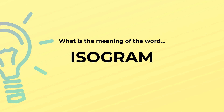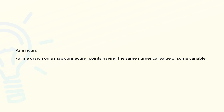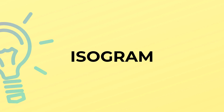What is the meaning of the word isogram? As a noun, a line drawn on a map connecting points having the same numerical value of some variable. Isogram is spelled I-S-O-G-R-A-M.